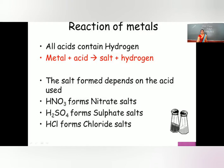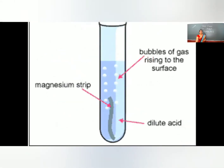As written here, the salt formed depends on the acid used. If you are using nitric acid, nitrate salt forms. If you are using sulfuric acid, sulfate salt forms. If you are using hydrochloric acid, chloride salt forms — it depends on the acid. The anion part of the acid will join with the metal.